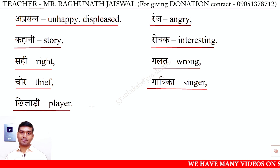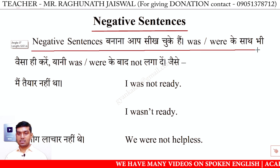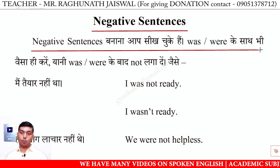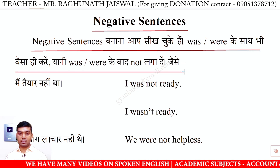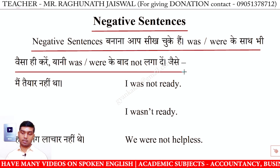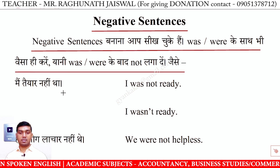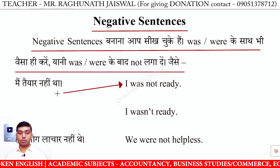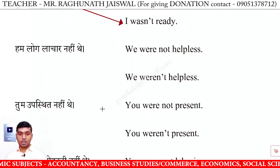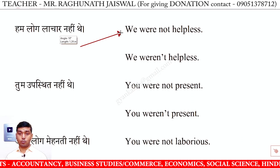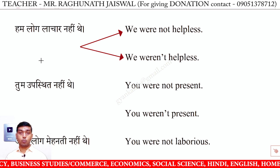Yahan hum log negative sentences dekh rahe hain — negative sentences banana aap seekh chuke hain. Was aur were ke saath bhi waisa hi karein — yaani was aur were ke baad 'not' laga dein. Jaise: main tayar nahi tha — I was not ready, short form I wasn't ready. Hum log lachar nahi the — we were not helpless, short form we weren't helpless.